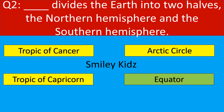The correct answer is Equator. The Equator divides the Earth into two halves — the Northern Hemisphere and the Southern Hemisphere.